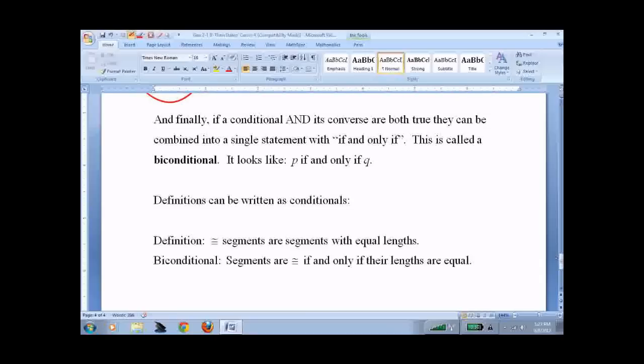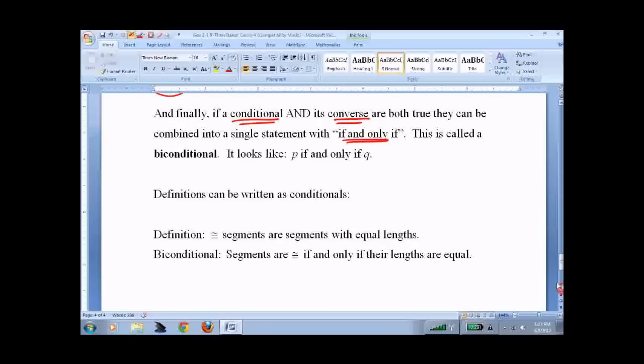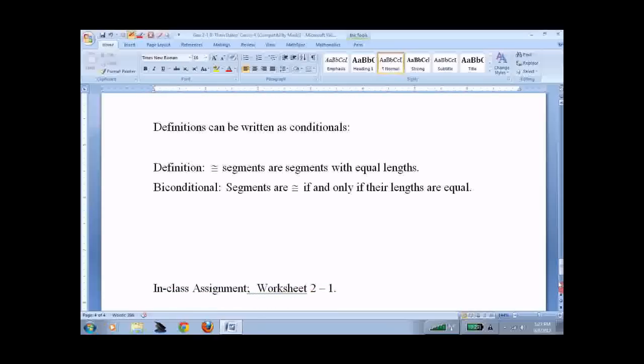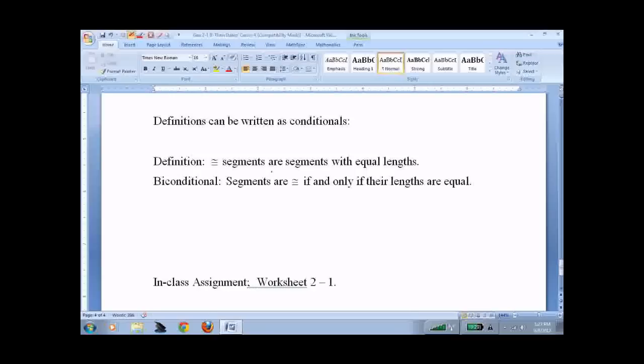Why did I bring up converse if it's got nothing to do with the original statement except that it steals its words? I brought it up because if the original statement is true and the converse is true, it's a definition. If it's a definition, we rewrite it if and only if. Here's the definition: congruent segments are segments with equal lengths. If I wanted to write it as a biconditional, I would say segments are congruent if and only if their lengths are equal.